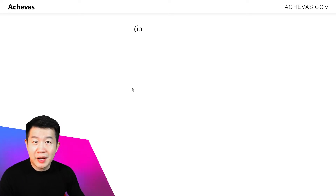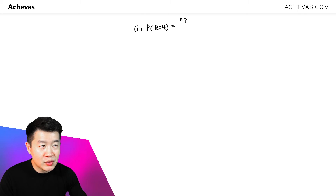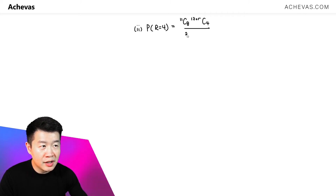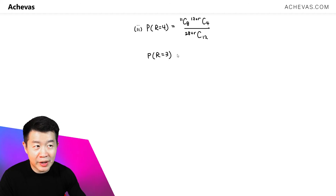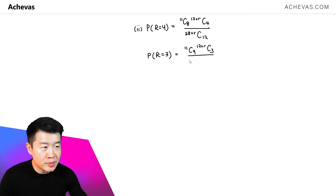Now we are working with 17 plus R number of rectangles. The first thing we should do is calculate the probability of getting 4 rectangles: out of 11 circles we choose 8, and out of 17+R rectangles we choose 4, giving a total of 12 shapes, divided by 28+R choose 12. We also calculate the probability of getting 3 rectangles: out of 11 circles we choose 9, and out of 17+R rectangles we choose 3, divided by 28+R choose 12.